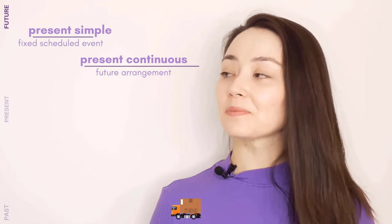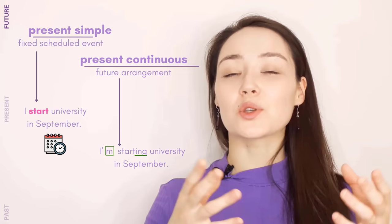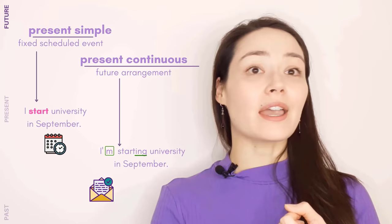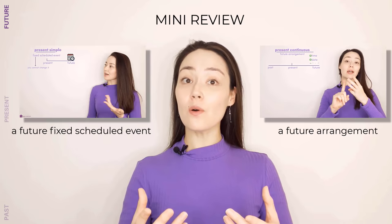Sometimes present simple and present continuous can be used interchangeably in the same way. I start university in September — present simple because this is a fixed scheduled event, the university decided the time and date. I'm starting university in September — present continuous because this is something I've arranged: I've been accepted, I have my dormitory, I have all my materials, my arrangement has been organized. Mini review: present simple for a fixed scheduled event, present continuous for an arrangement — something you have planned.